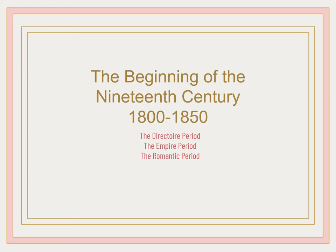We are going to talk about 50 years, covering the beginning of the 19th century. There are three specific periods: the French Revolution and Directory period, the Empire period which is post-French Revolution, and the overarching Romantic period, which includes England, most of Europe, and our new country, the United States.